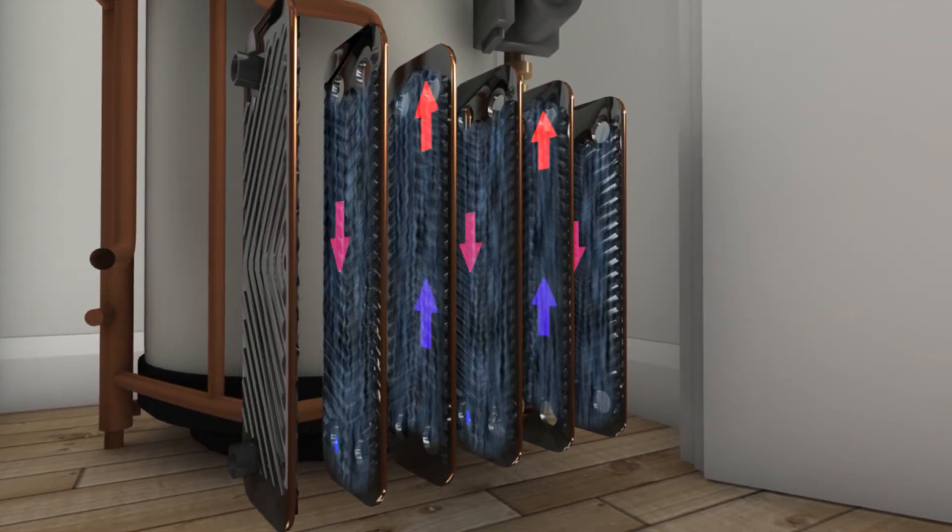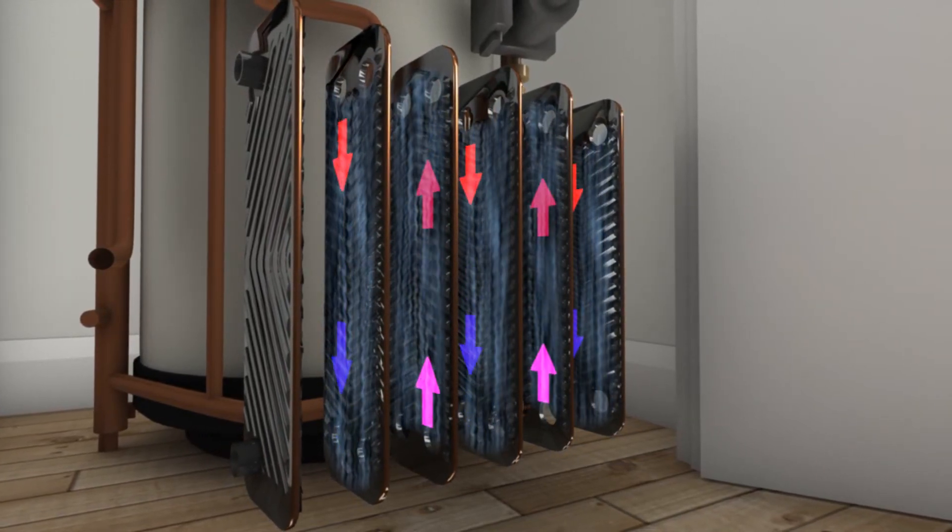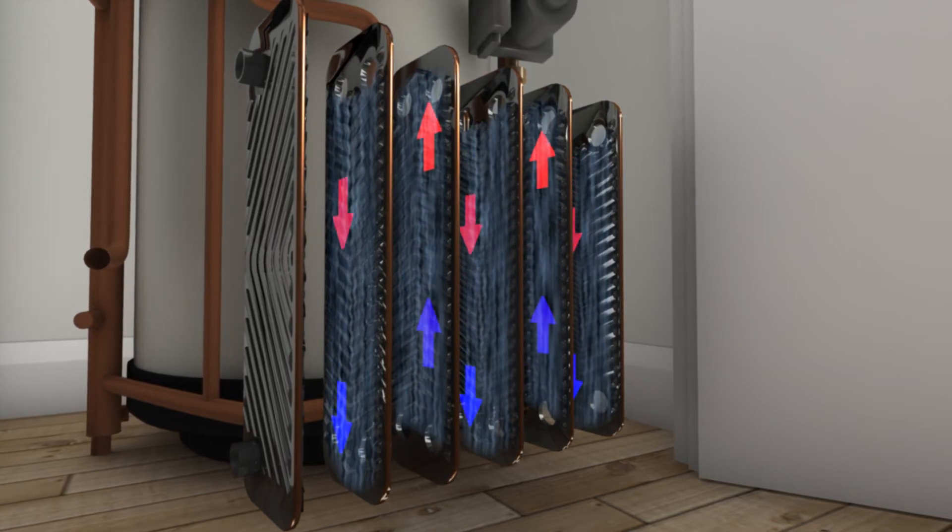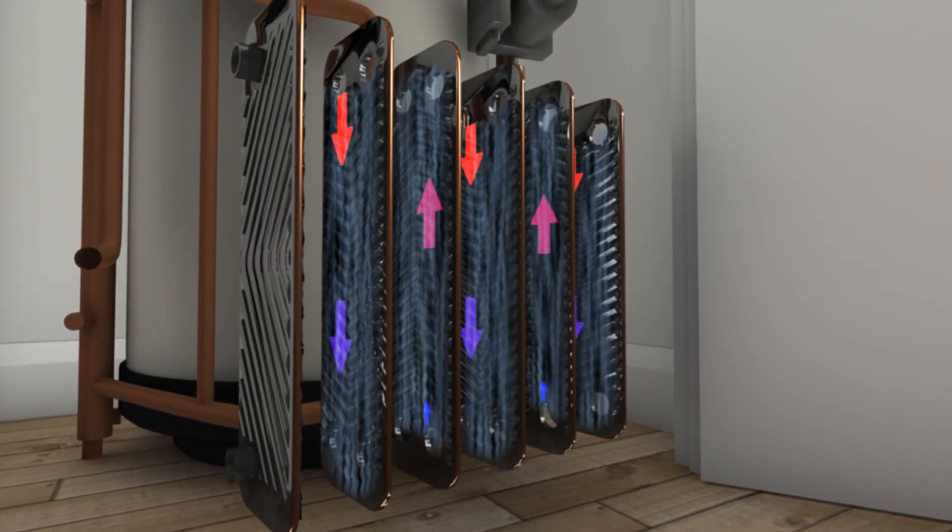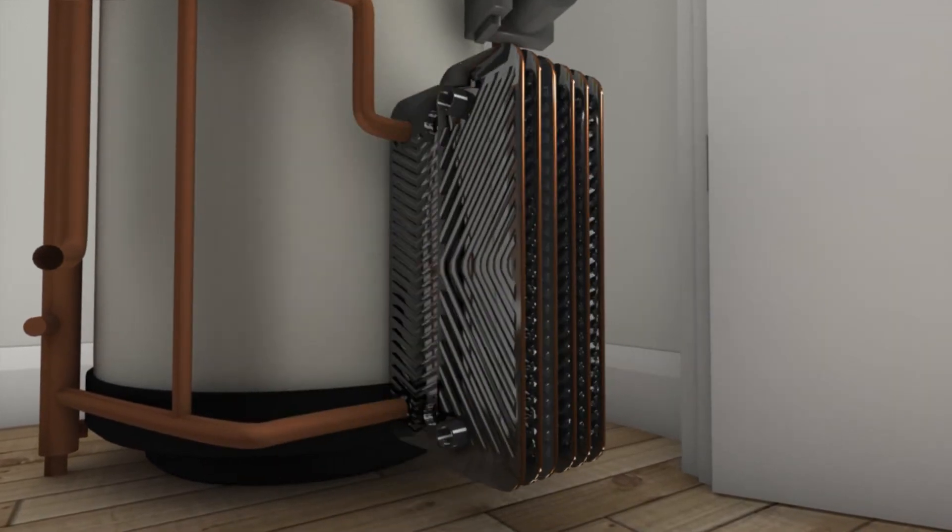This is called forced convection and it allows us to achieve an increase of 17% in efficiency over natural convection and speed up the time it takes to heat up the cylinder.